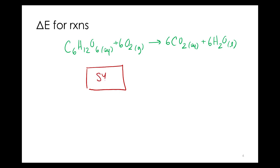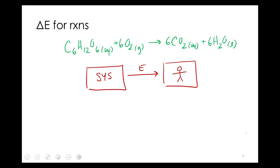So this is our reaction, our system, and the energy is coming to us, the surroundings. So that's why we do this reaction — to get energy from it. So if the system is losing energy, what is the sign of the change in energy for the system?